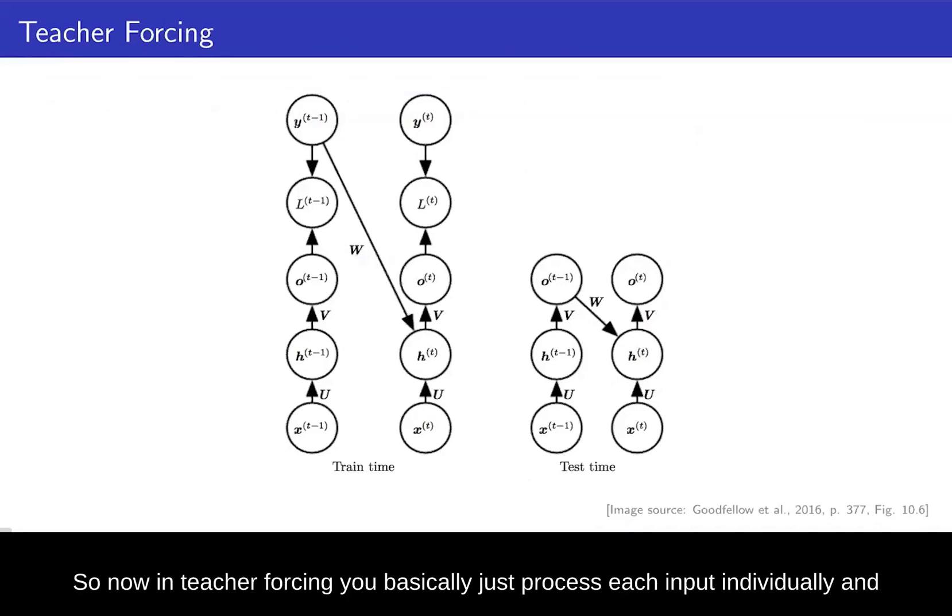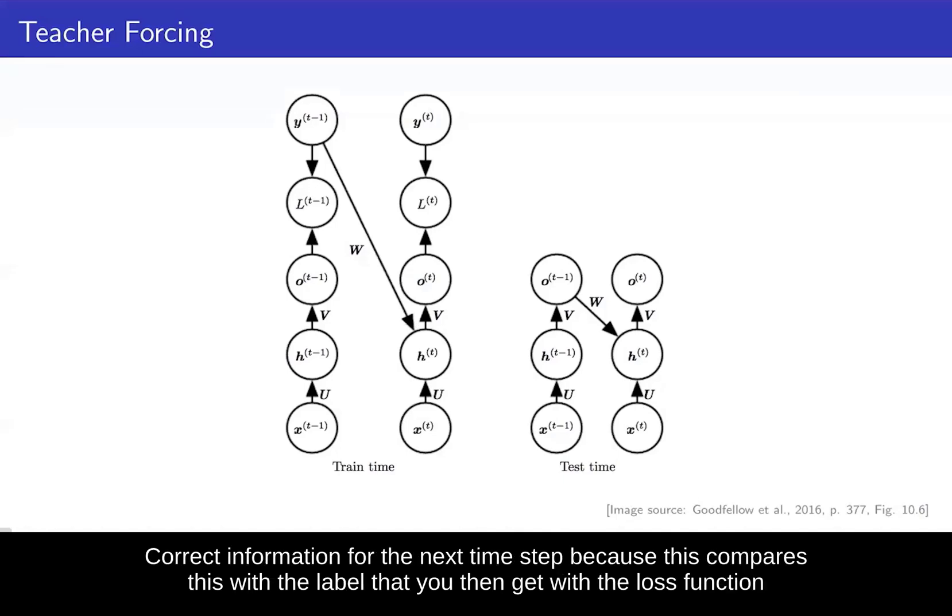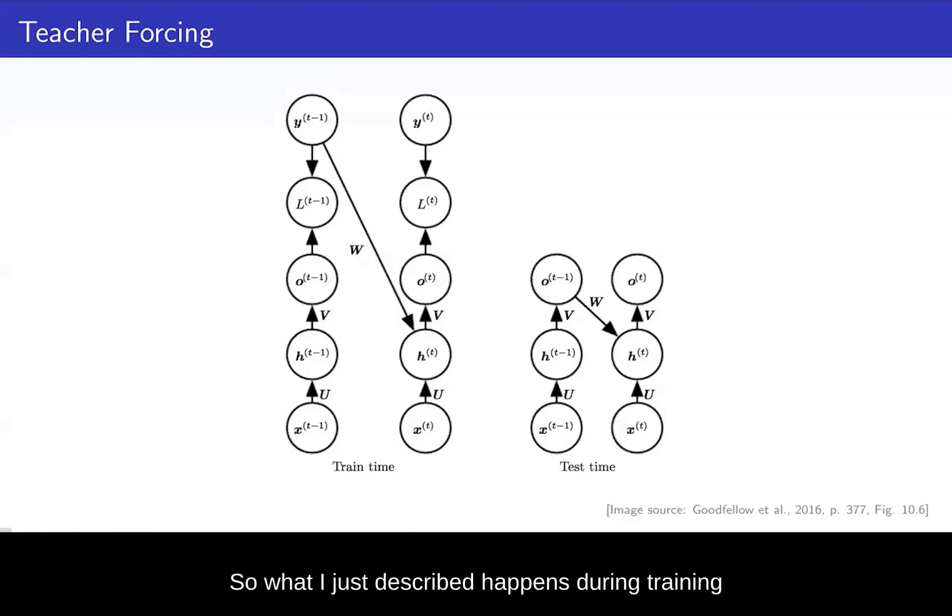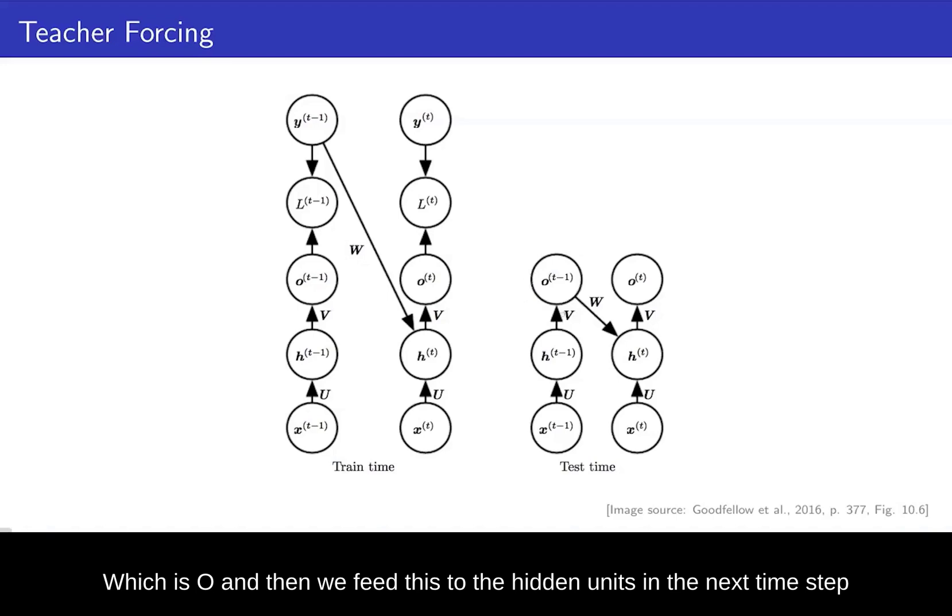So in teacher forcing, you basically just process each input individually and make a prediction at a particular time step. You also have a label Y at each time step. And for the next time step, you just take whatever label you had in the previous time step, and that goes into the hidden units in the next time step. This gives the model the exact correct information for the next time step. What I just described happens during training, whereas in testing, you then take the predictions or the output made by the model from one time step, and we feed this to the hidden units in the next time step.